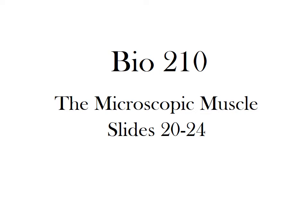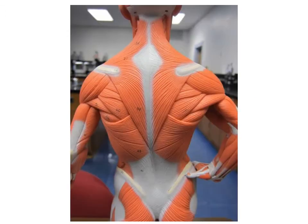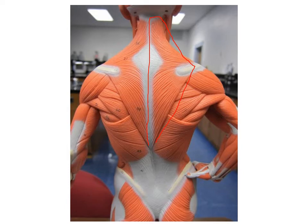Today we're going to look at the microscopic muscle and the structures involved in it. A muscle cell, which is also called a muscle fiber. Looking at this picture, seeing the posterior side of our little model, this muscle — which I'll outline right here — is called the trapezius. What I want to concentrate on is these little fibers right here.